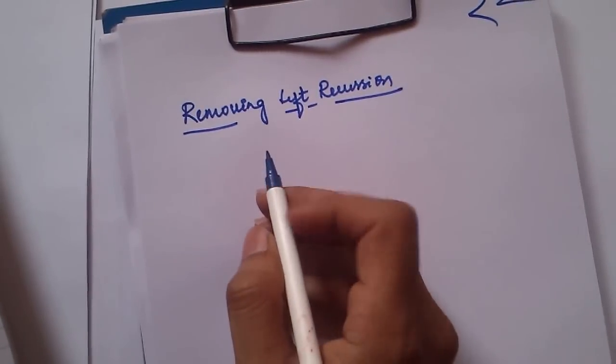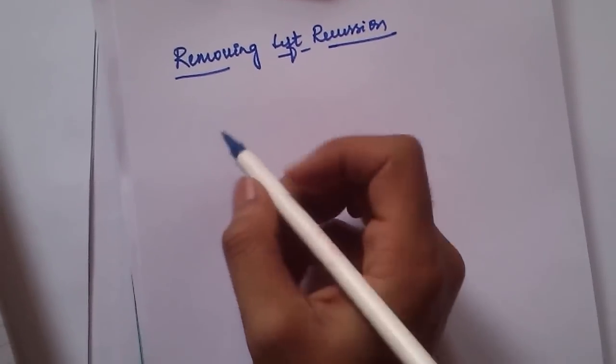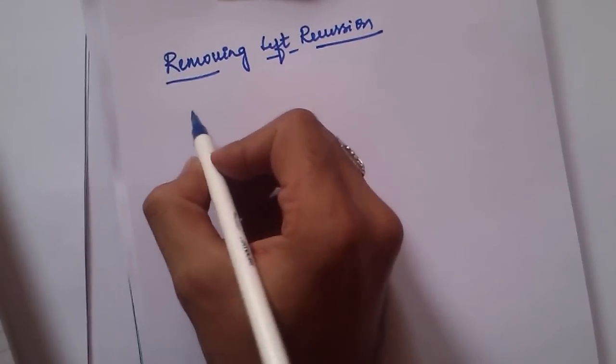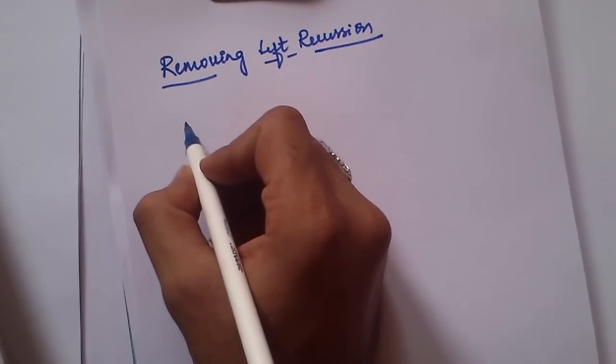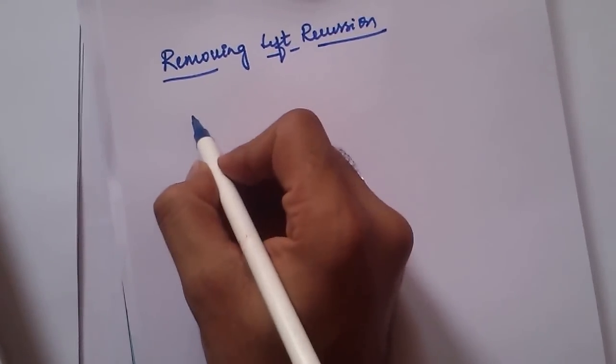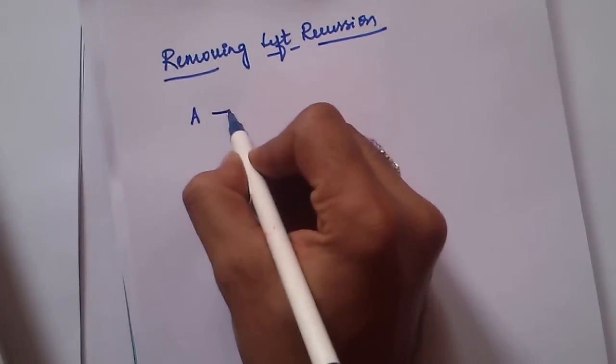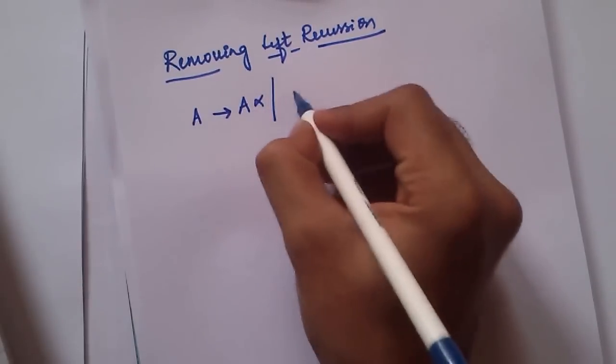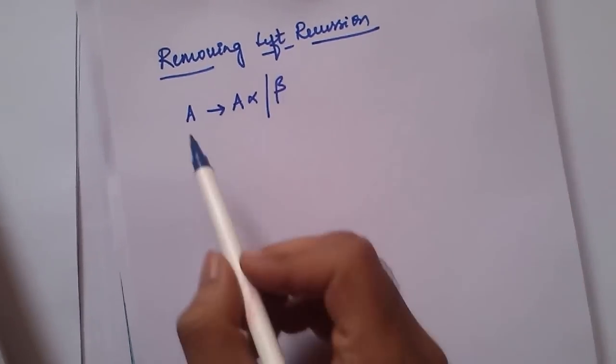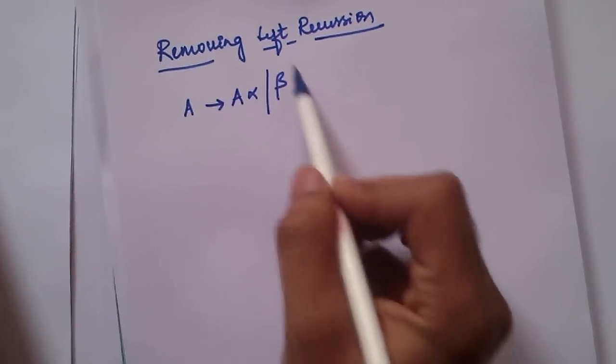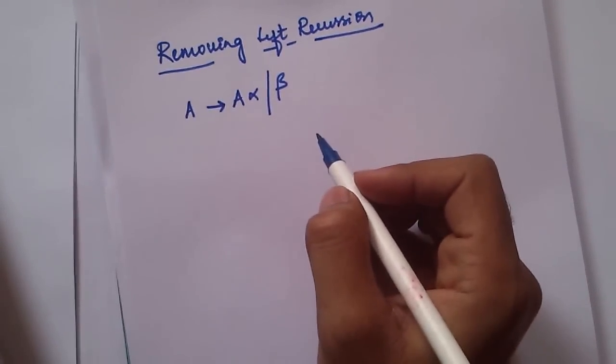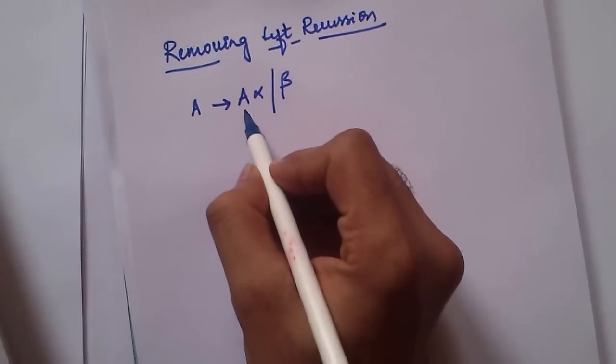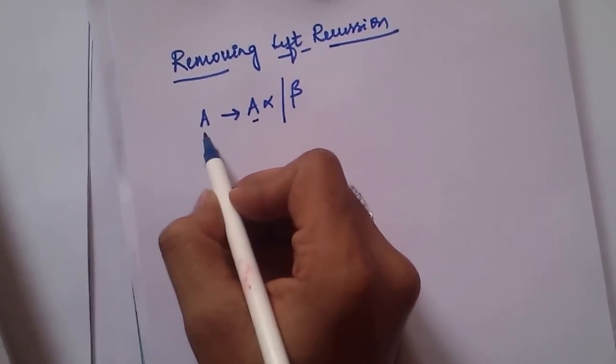This is very simple. The rule goes like this: if you have a production which looks like A → Aα | β, this is a left recursive grammar. How do we know this is left recursive? Because you have this non-terminal A which is on the left side of this production.